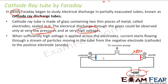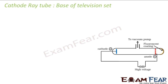When the high voltage is applied, current starts flowing in and electrons start flowing in. But you can't see it because you can't see electrons. So to see the electron, they coated the end of the tube with a fluorescent coating.